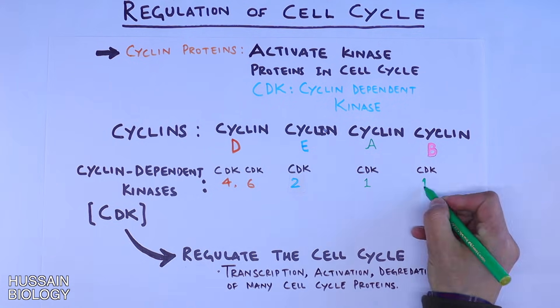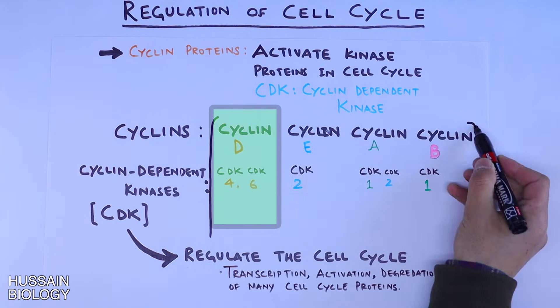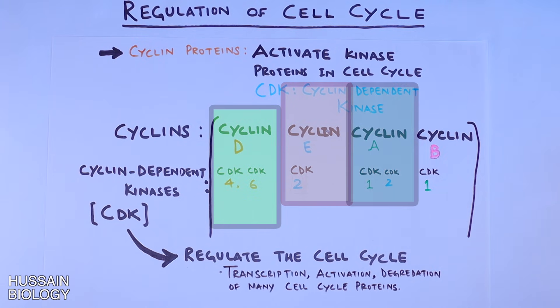CDK4 and CDK6 bind cyclin D. CDK2 binds cyclin E. CDK1 as well as CDK2 bind cyclin A. And finally, cyclin B also binds CDK1.